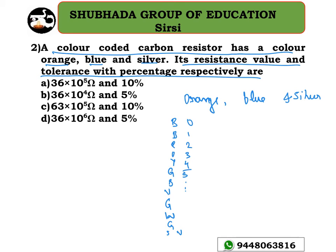Orange in the mnemonic corresponds to 3. So the first two digits are 3 and 3. Blue corresponds to 6, so the third band gives the multiplier 10 to the power 6. There is no third digit band and silver indicates a tolerance of plus or minus 10%.